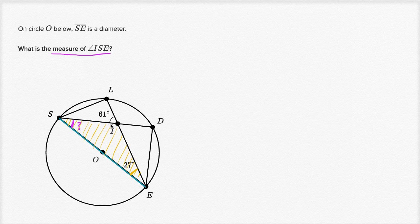If we could figure out this angle right over here — this would be angle SIE — then if we know two interior angles of a triangle, we can figure out the third. And angle SIE we can figure out because it's supplementary to this 61 degree angle. So this angle plus the 61 degree angle is going to be equal to 180 degrees because they are supplementary. So this angle is going to be 180 minus 61. 180 minus 60 would be 120, and then minus 1, so that's 119 degrees.